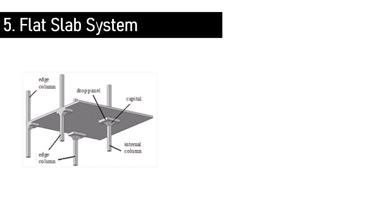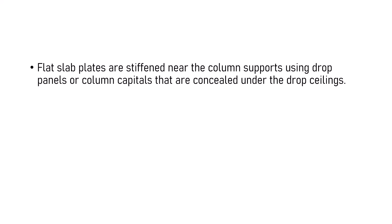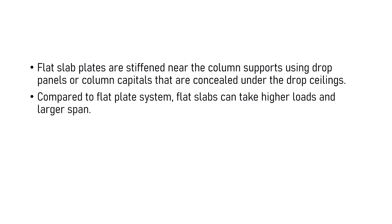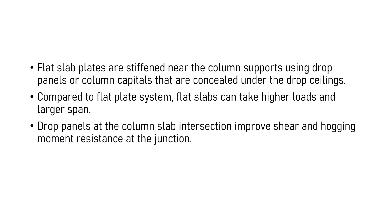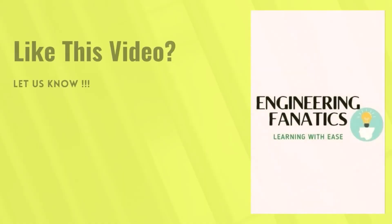Flat slab system. These are slab systems in which flat slab plates are stiffened near the column support using drop panels or column capitals that are concealed under the drop ceilings. Compared to the flat plate system, flat slabs can take higher loads and larger spans. This enhanced property is because the drop panels at the column-slab intersection improve shear and hogging moment resistance at the junction. The thickness of flat slab varies between 125 to 300 mm for spans of 4 to 9 meters. These slabs possess higher dead loads per unit area compared to other systems.